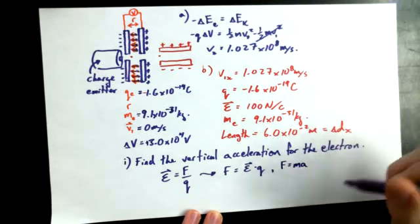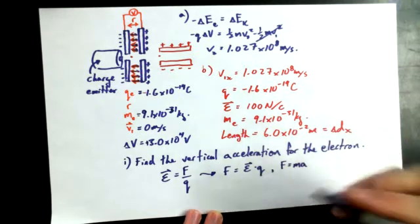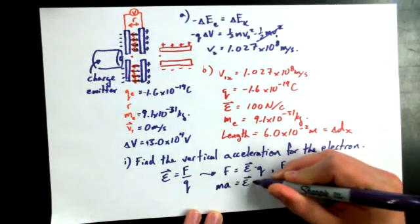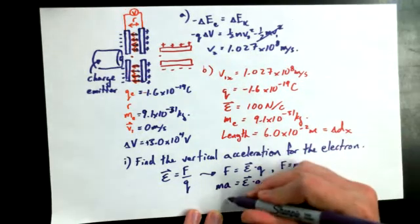So we could sub that into this equation, because Newton can't be wrong. Or can he? Well, he's not wrong in this case, anyways. Mass times acceleration is equal to electric field intensity times charge. And if I want to know the vertical acceleration magnitude, I know the direction is upward.